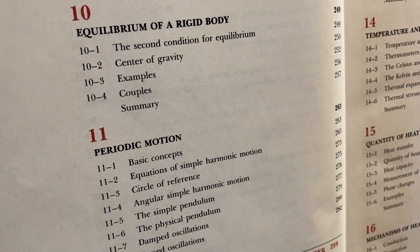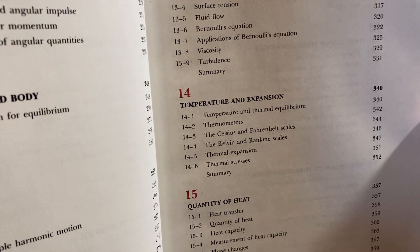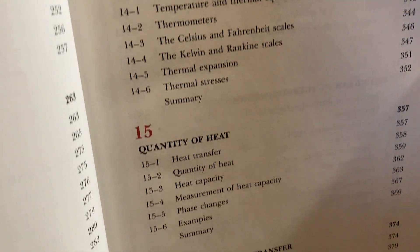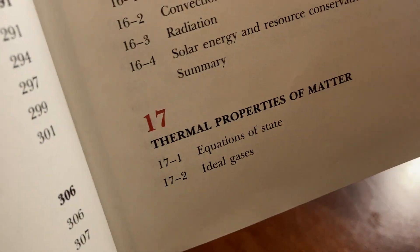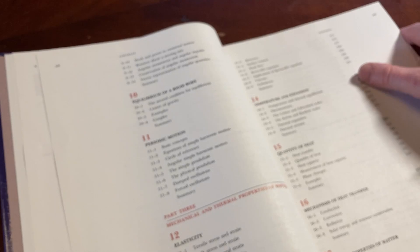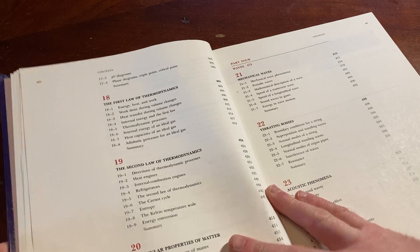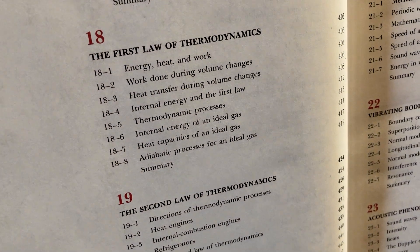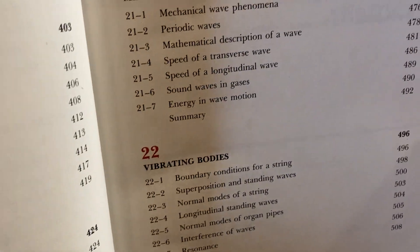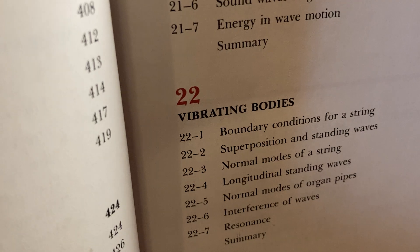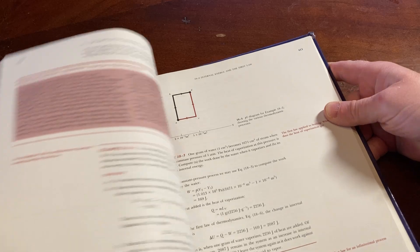Equilibrium of a rigid body. Periodic motion. Elasticity. Fluid mechanics. Then we have temperature and expansion. Quantity of heat. Mechanisms of heat transfer. Thermal properties of matter. There are so many chapters in this book. That's chapter, we're on 17 now. That's quite a bit. The first law of thermodynamics. The second law of thermodynamics. Molecular properties of matter. Mechanical waves. Vibrating bodies. Acoustic phenomena. So much content in this book. It's just completely insane.